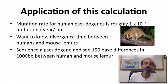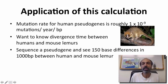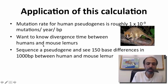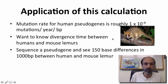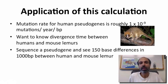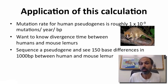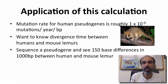Here's an application. Let's say we know the mutation rate for human pseudogenes is roughly 1 times 10 to the minus 9 mutations per year per base pair. Let's say we want to know the divergence time between humans and mouse lemurs — there's an interesting picture of a mouse lemur here. What we do is sequence a particular pseudogene. A pseudogene, by the way, is a gene that is no longer functional, so it's assumed that mutations arising in it will be neutral and have no effect on fitness. We sequence the pseudogene and find 150 base differences in 1,000 base pairs between the human and mouse lemur.